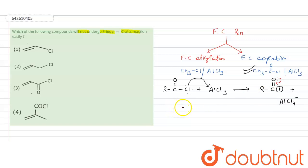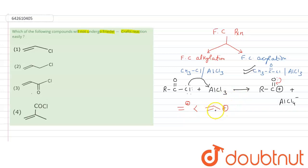Regarding carbocation stability: tertiary is most stable, then secondary, then primary. If we talk about vinyl carbocation versus allylic carbocation — the vinyl cation is less stable because it has no resonance, while the allyl cation is more stable because it is resonance stabilized. This is the basic concept behind the Friedel-Crafts reaction. Let's check the options.